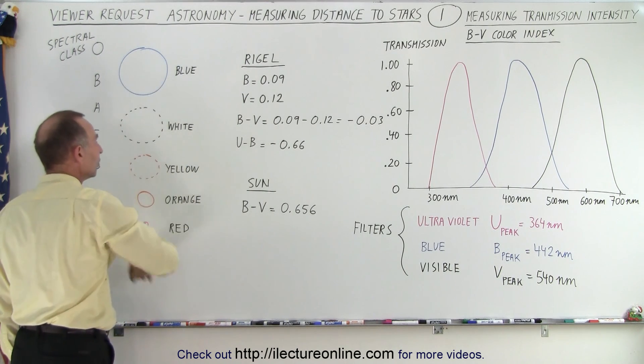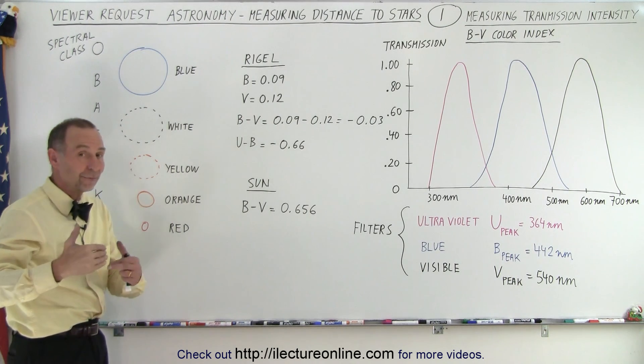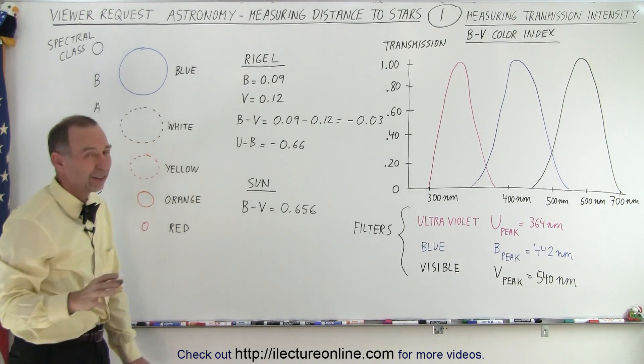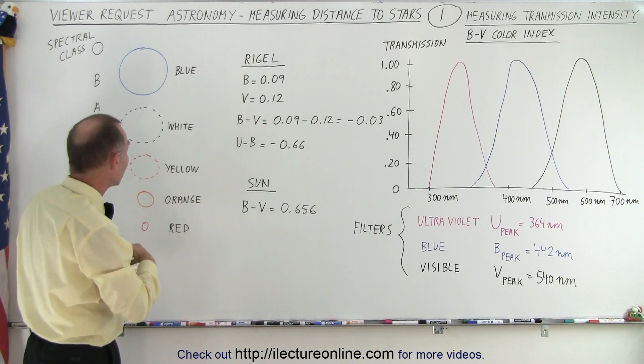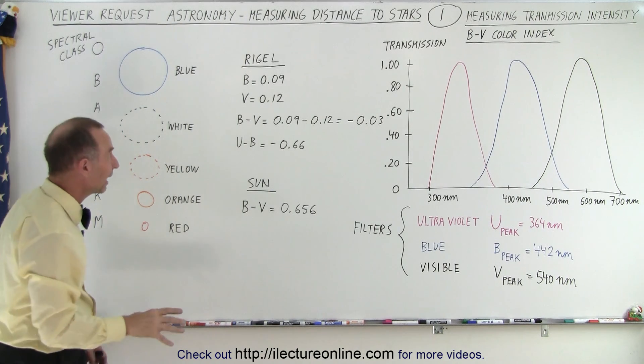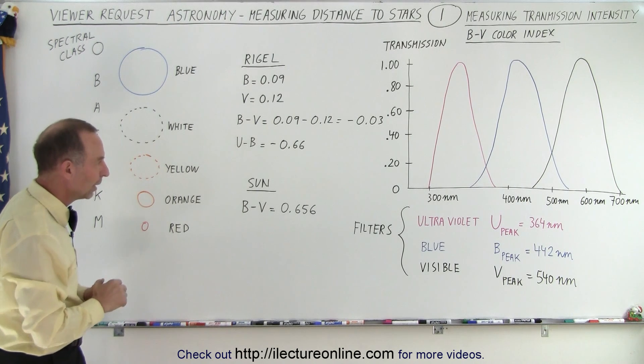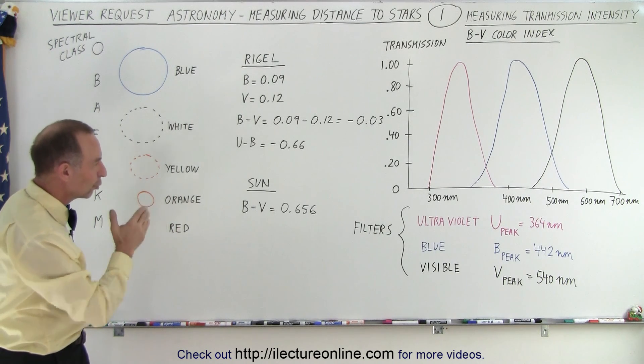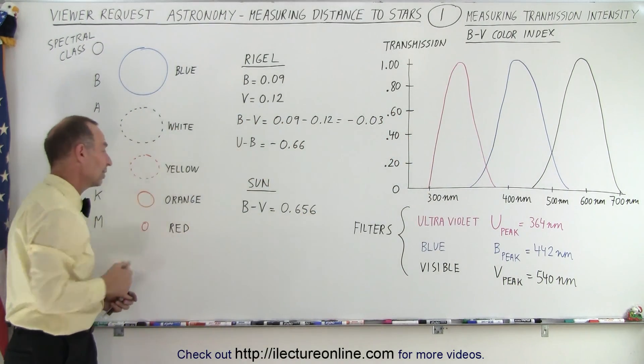Now Rigel is one of those blue giants, and the sun is a yellow star, and so we're able to figure out what spectral class we're dealing with. Now with Rigel, it's a little bit more complicated, because Rigel has begun the process into what we think is the red giant stage, and so it's beginning to change. And so we also have to take into account the spectral type in the case of Rigel, which makes it much more complicated to find the distance to Rigel. So what we're doing here is first measuring the transmission of the starlight through the various filters, primarily to get the B minus V color index in order to establish what kind of star we're dealing with.